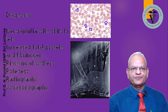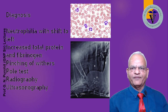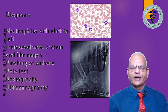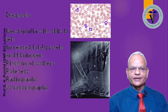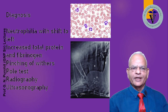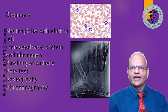Diagnosis is based on the blood picture with neutrophilia shift to left — this is the most common procedure used for early diagnosis. Increased total protein and fibrinogen are also supportive diagnostic methods. Pinching of the withers leads to intense pain in the animal. Then there is the pole test, wherein a bamboo is placed just underneath the chest and raised, causing sharp grunting or sharp pain.